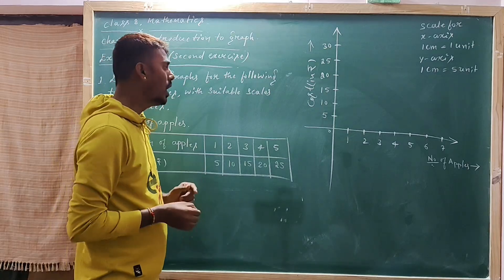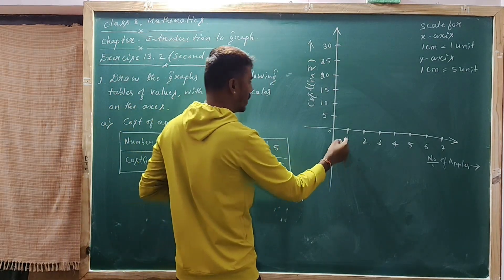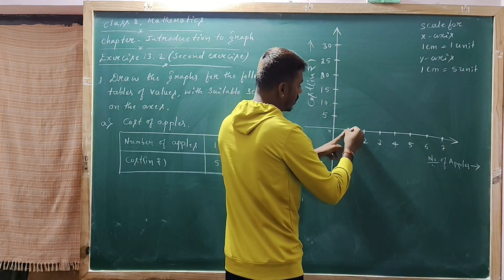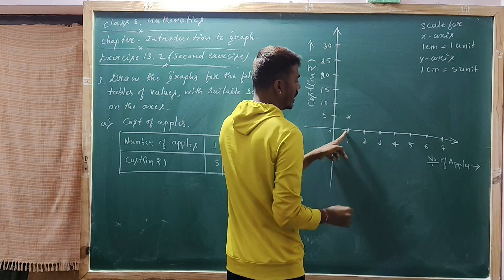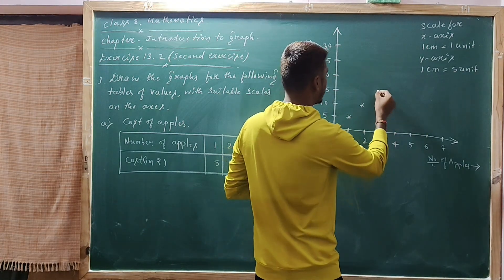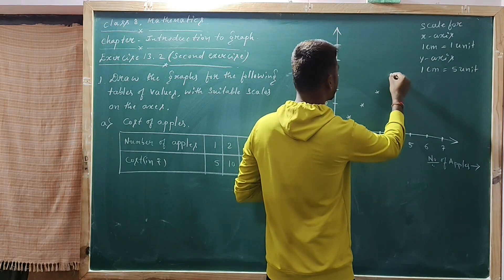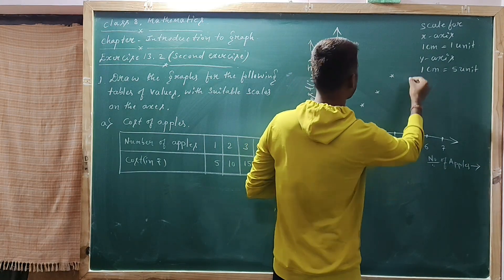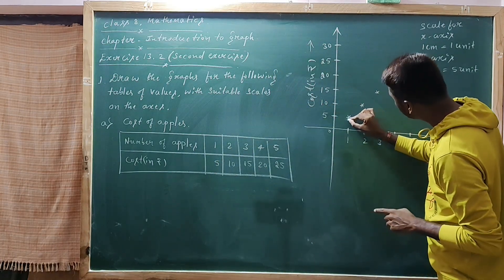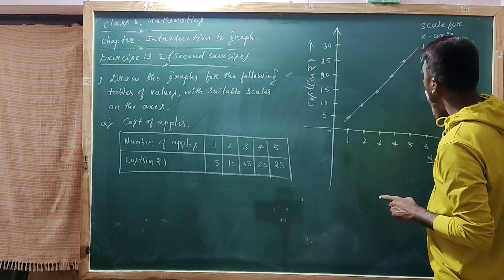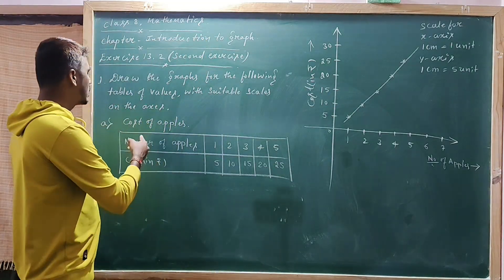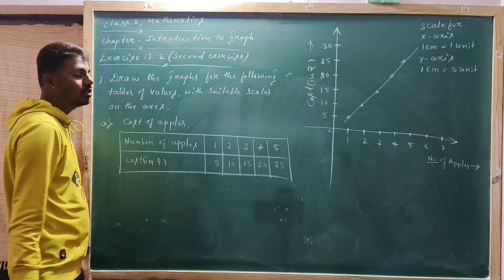1 apple costs 5 rupees. 2 apples cost 10 rupees. 3 apples cost 15 rupees. 4 apples cost 20 rupees. 5 apples cost 25 rupees. Then join all the coordinate points. This graph indicates the number of apples versus their cost.